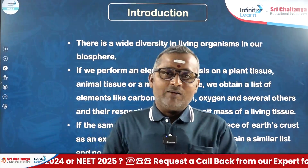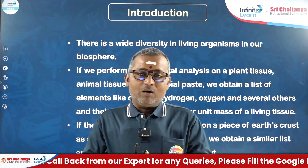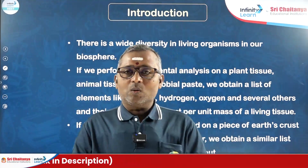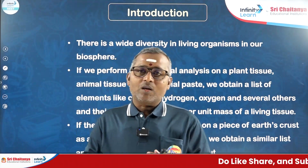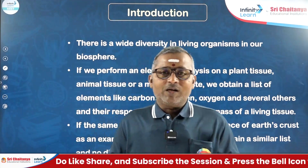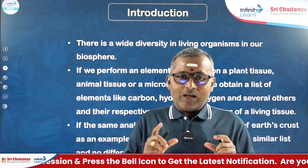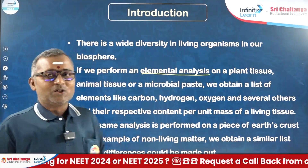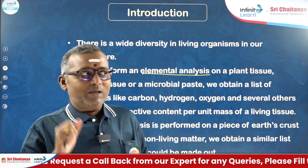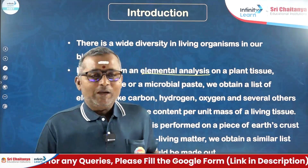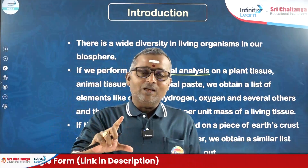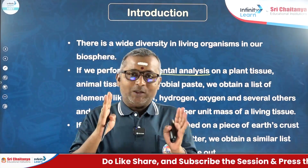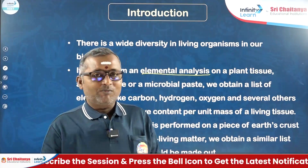We all know that there is a wide diversity in the living world. Living organisms are composed of different kinds of chemicals, including different kinds of elements and also different kinds of chemical compounds, including both organic as well as inorganic compounds. To find out the elemental composition, one has to do elemental analysis of plant tissues, animal tissues, or a microbial paste. When you do the elemental analysis, you can find a list of elements present in the living organisms and also their respective content in the biomass.